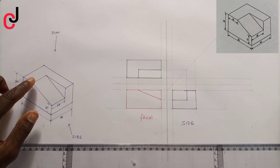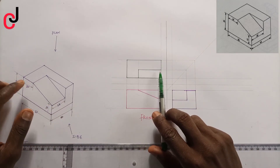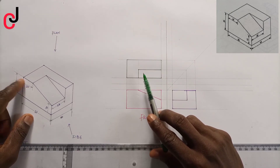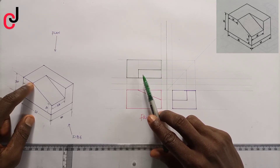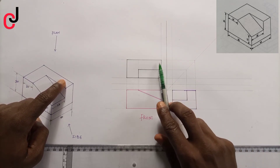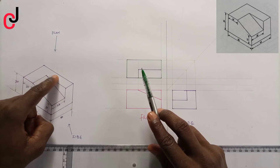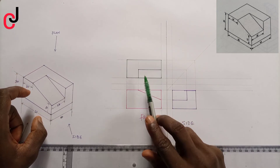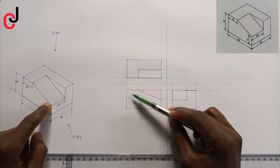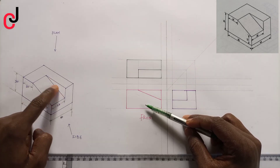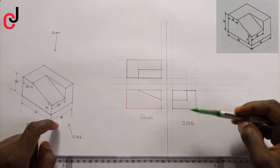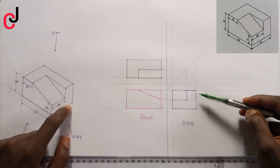Now finally you can see the slant height — this is it when you're looking at it from the plan. This is your 20 mm. You can see the remaining portion of the plan from the top. From our front view this is it — you can see this, and from our side view, also known as the end elevation, you can see this, which is this.